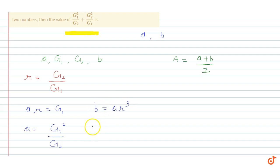So b's value will be, a's value we found is g1 square by g2, into r cube. What is r cube? r cube will be g2 to the power 3 divided by g1 to the power 3.